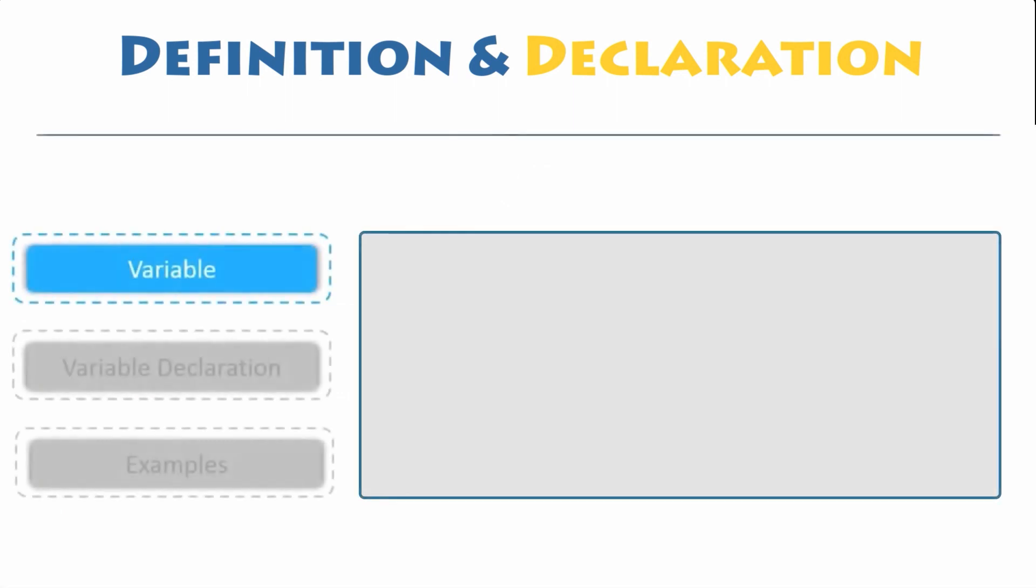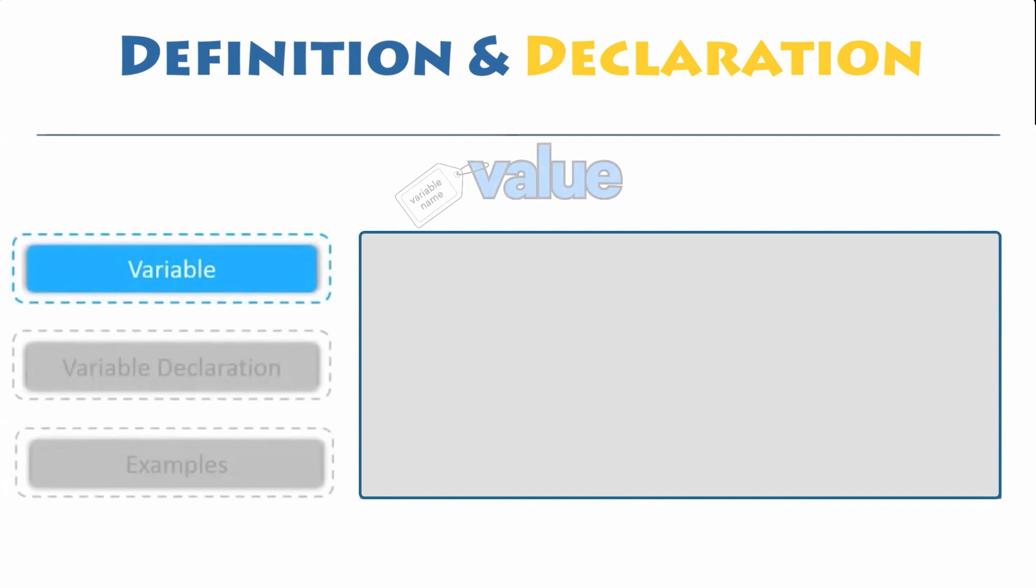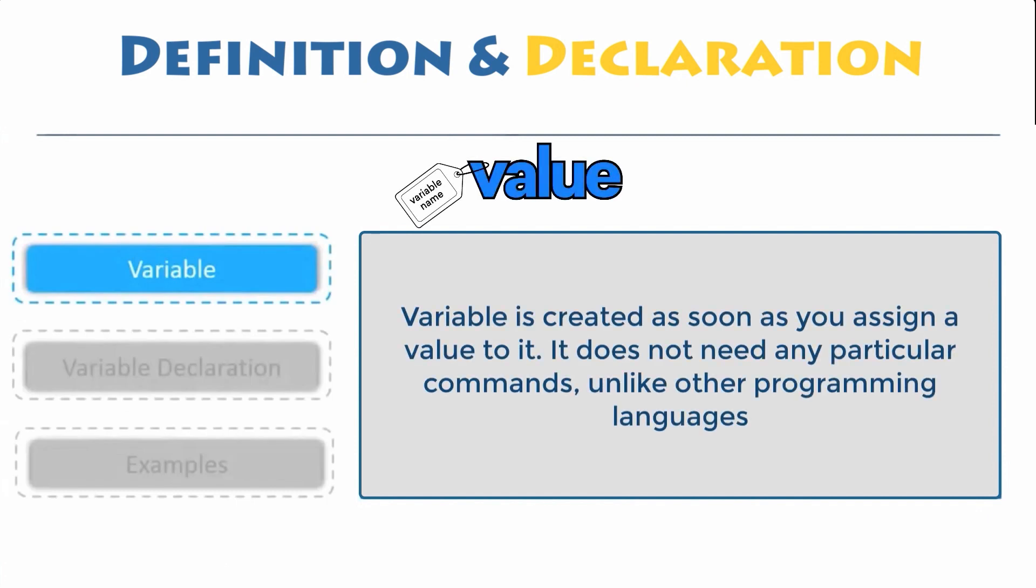Variable definition. In a programming language, a variable is a memory location. Think of a variable as a name attached to a particular object. Variables are like containers for storing data values. The value that you have stored into this container may change in the future, according to the specifications.